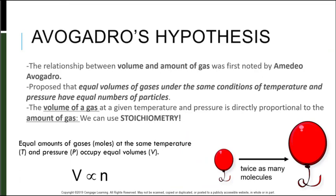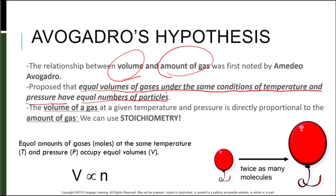This is the last piece of the section, Avogadro's hypothesis. We're looking at the relationship between volume and the amount of gas that was first noted by Amadeo Avogadro. He proposed that equal volumes of gases under the same conditions of temperature and pressure have equal numbers of particles.